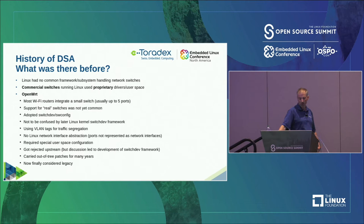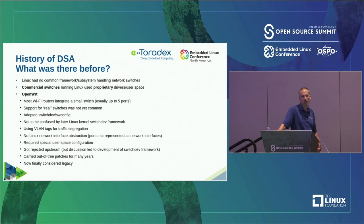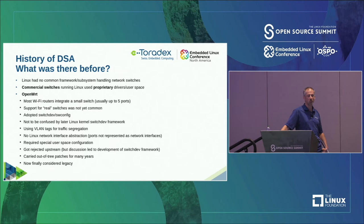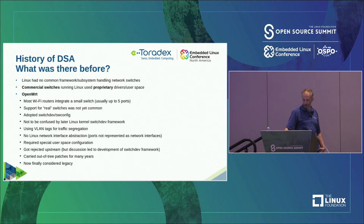That discussion actually led to the development of the later Switch Dev which is now in mainline. OpenWRT carried out-of-tree patches for the longest time. Only now with the just-released 21.02 version is it at least partially migrated to using DSA. It depends on the target — certain architectures were migrated, others not yet. But that's a work in progress, and I expect the next stable OpenWRT release will have everything migrated over.